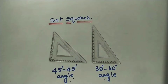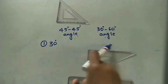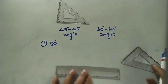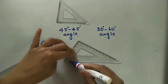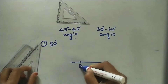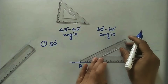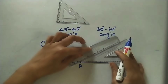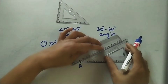Let's take some examples of how to mark angles using a single set square and by combining both. To mark 30 degrees, I am directly taking the 30-60 set square. This side is 60 degrees, so at this point I mark 30 degrees. I am keeping this on the inclined surface.